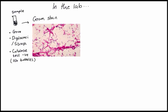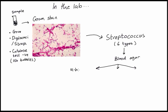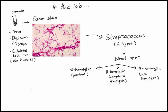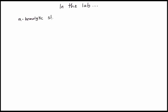As you can see under the microscope, this is a sample of Streptococcus — gram-positive cocci and catalase negative — but we don't know which kind of strep it is. There are six kinds of Streptococcus and we differentiate them based on blood agar: alpha hemolytic, beta hemolytic, and gamma hemolytic, with two kinds of Streptococcus in each.